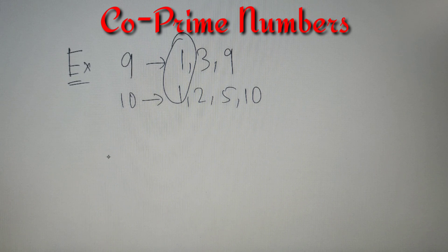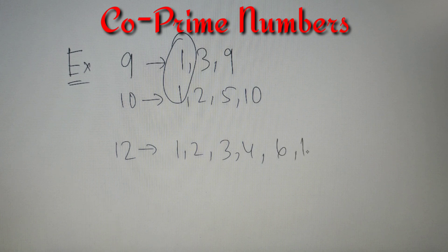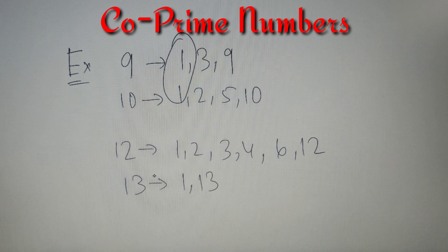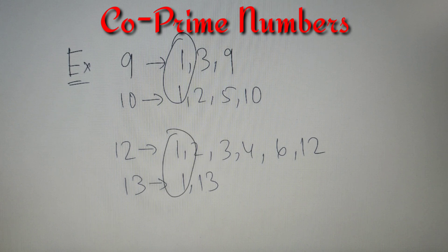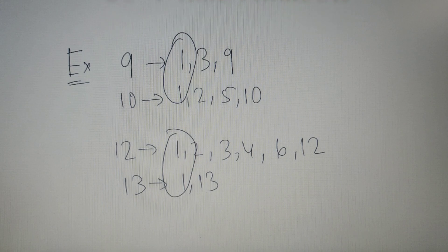Let's take one more example for better clarity. Suppose the two numbers are 12 and 13. The factors of 12 are 1, 2, 3, 4, 6, and 12 itself, and 13 has only two factors: 1 and 13. There is only one common factor between these two numbers, which is 1, so they are co-prime to each other. In short, two numbers which do not have a common factor except 1 are called co-prime or relatively prime to each other.